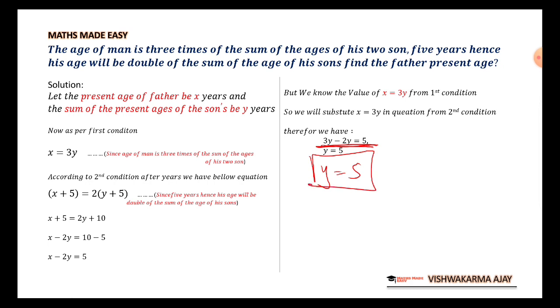But, Y is what? Y is not the age of father. It is the sum of age of his son. We need to find the father's age, father's present age. So, I will be substituting the value of Y is equal to 5 in the equation here.